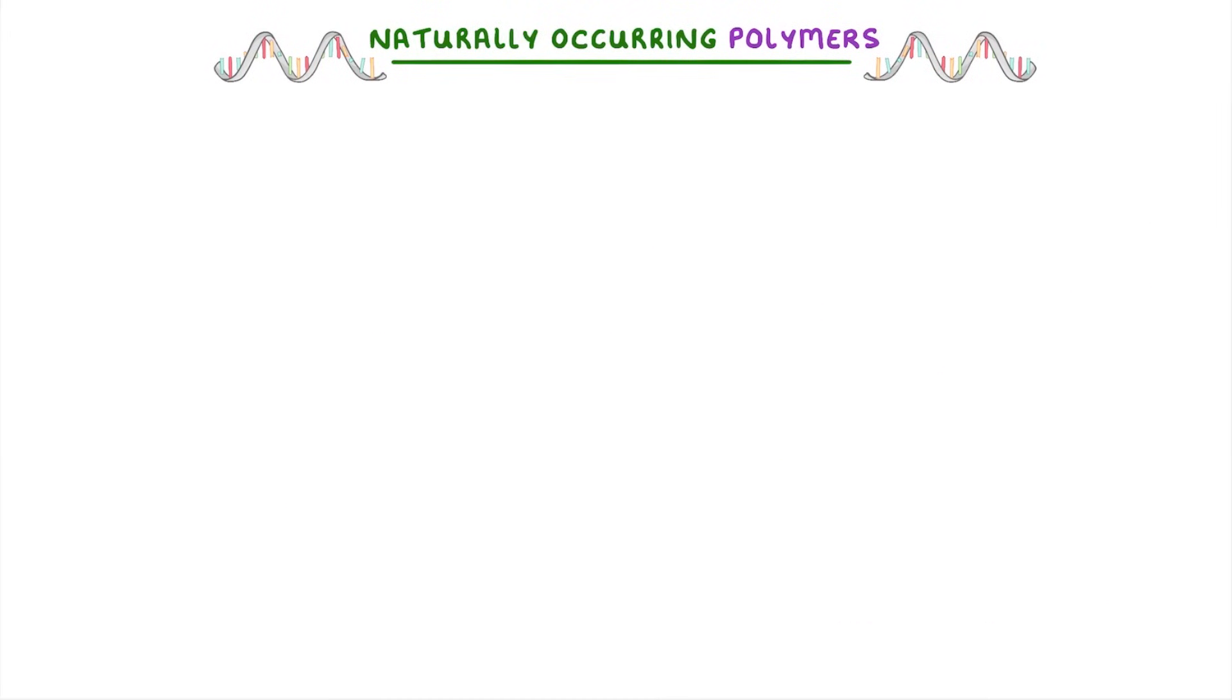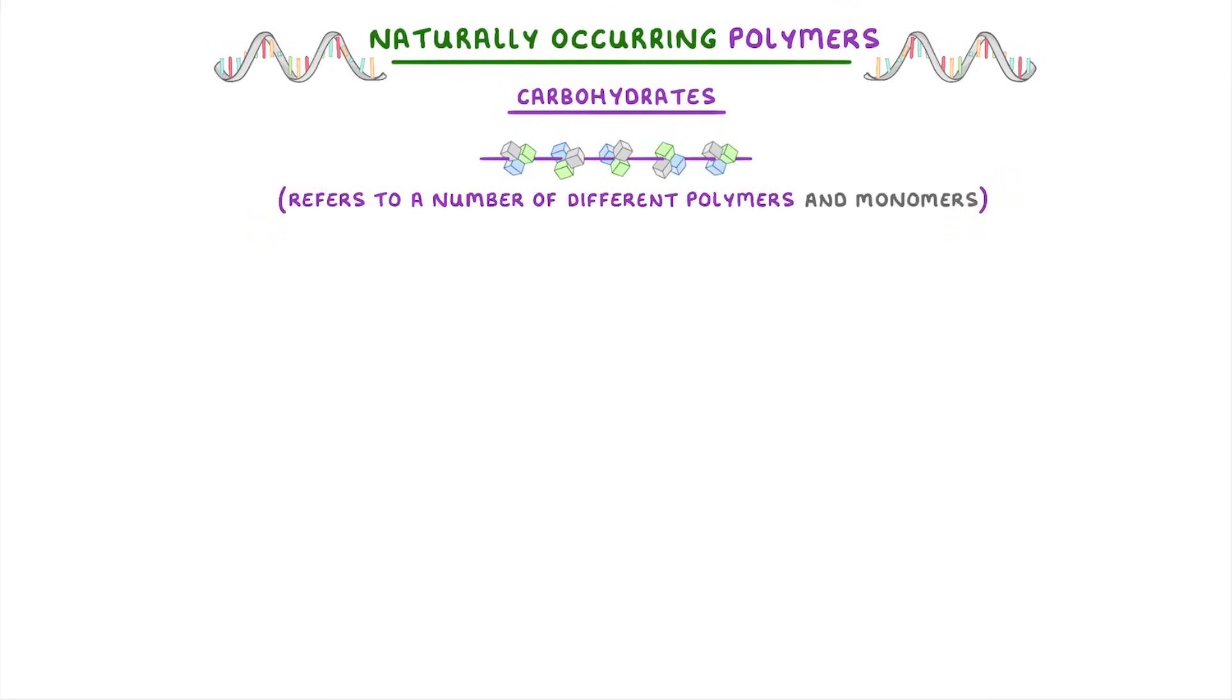The last polymer to look at are carbohydrates. The term carbohydrate is actually a general term that refers to a number of different polymers and monomers that we derive energy from, and are all made of only carbon, oxygen, and hydrogen.